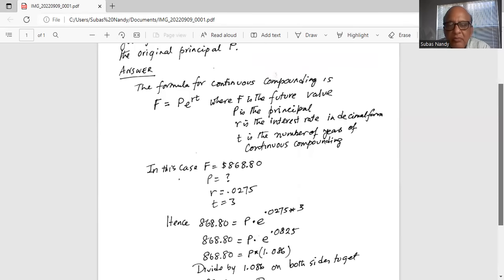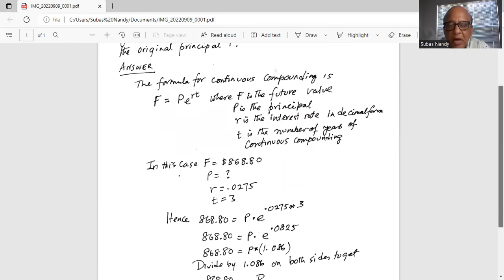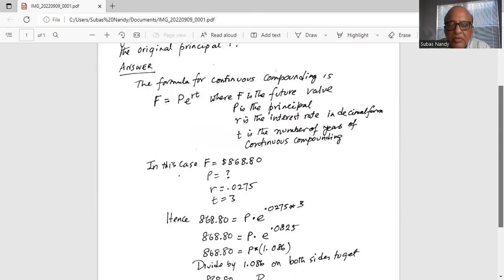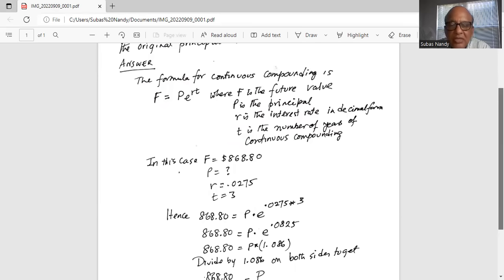So 868.80 equals P multiplied by e raised to the power of 0.0275 times 3, or 868.80 equals P multiplied by e raised to the power of 0.0825.